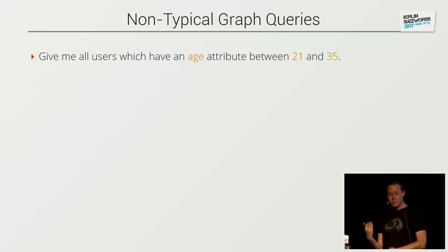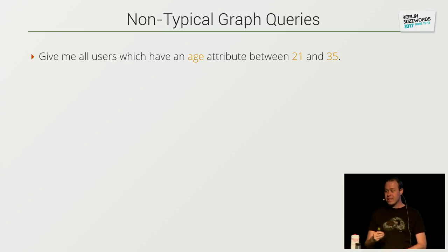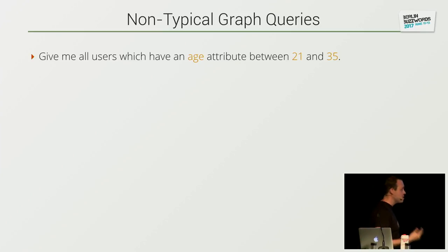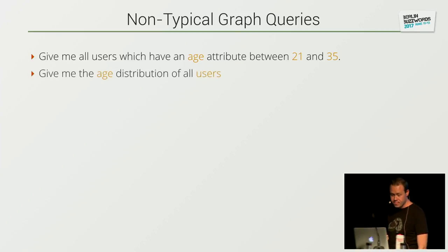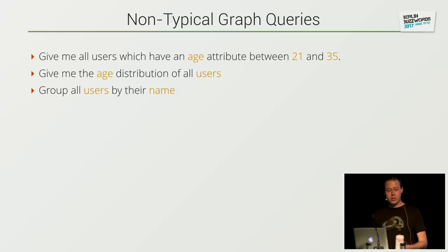What are non-typical graph queries — queries where graph databases typically perform rather badly? That is everything that does not care for those relations, but only for the data stored in all the vertices. For example, typical graph databases cannot, in a fast fashion, solve the question: please give me all the users that have an age attribute between 21 and 35. Or just give me the age distribution of all my users, or group all users by their name. This should better be done in relational or document stores, because they are more optimized for these types of queries.